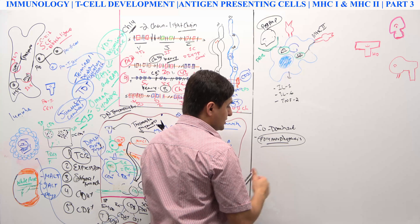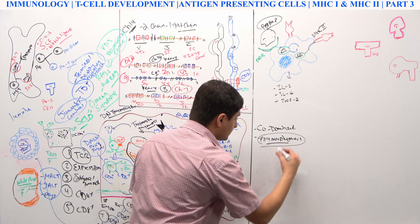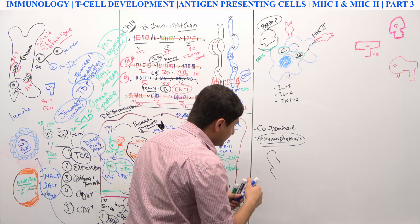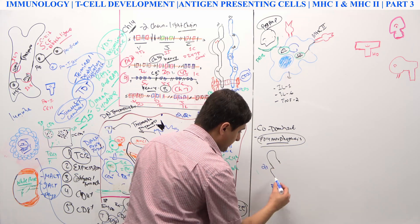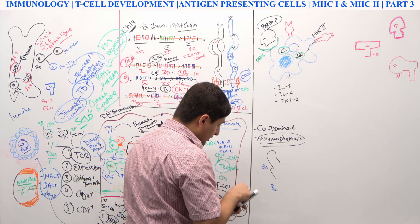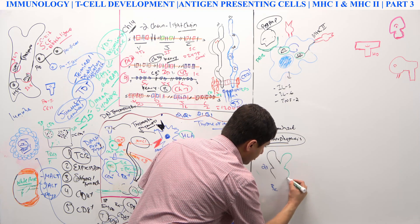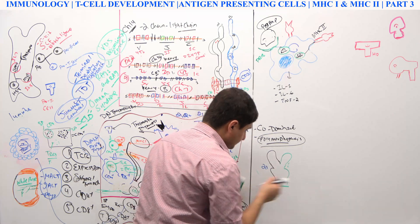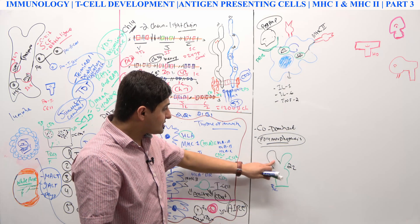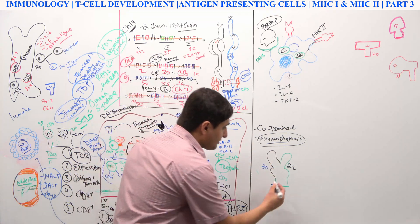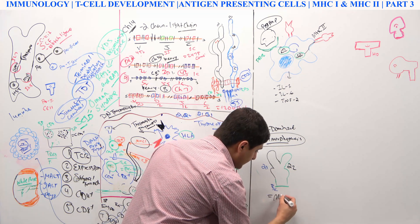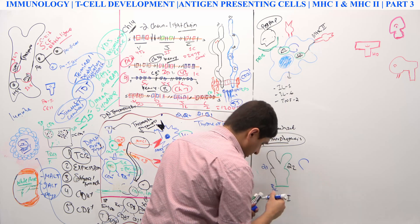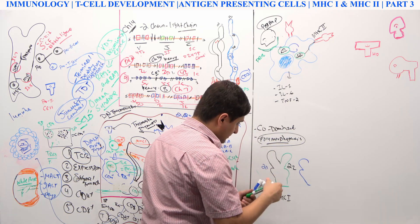When we synthesize MHC, it looks something like this. There is one alpha chain right here, and there is a beta-2 globulin. There is also a groove region — let's say alpha-1 and alpha-2 domains. This structure is how MHC1 is synthesized — the alpha-1 and alpha-2 chains form the MHC1 complex, also called HLA-A, HLA-B, or HLA-C.